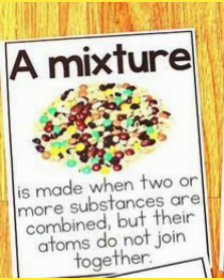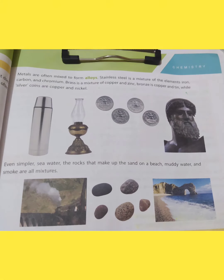We have studied that mixtures are a combination of many things. A mixture is made when two or more substances are combined but the atoms do not join together. When metals are combined they form alloys. Stainless steel is a mixture of iron, carbon, and chromium. Brass is a mixture of copper and zinc. Bronze is copper and tin, while silver coins are copper and nickel.